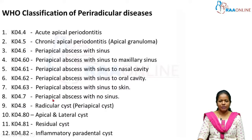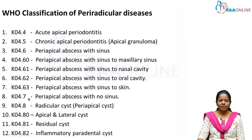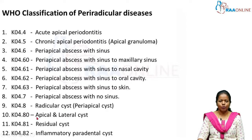K04.63 is periapical abscess with sinus to the skin, where the sinus opens onto the facial skin. K04.7 is periapical abscess with no sinus. K04.8 covers cysts: K04.80 is apical and lateral cyst, K04.81 is residual cyst, and K04.82 is inflammatory periodontal cyst.